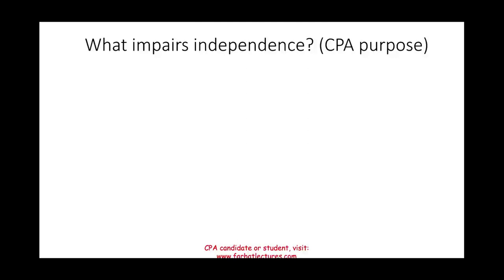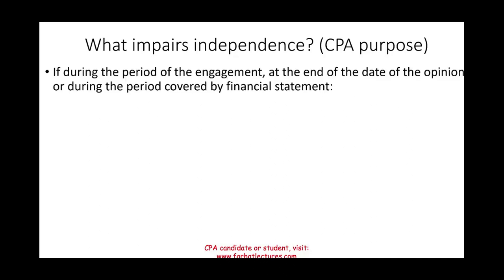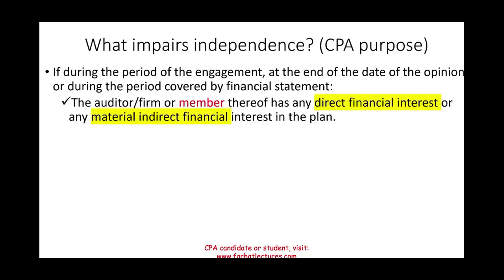Now, what impairs independence for CPA exam purposes? If during the engagement, at the end of the date of the opinion, or during the period covered by the financial statement, the auditor, the firm, or a member thereof has any direct financial interests or any material indirect financial interests in the plan, independence is impaired. You cannot have any direct financial interests, and you cannot have any material indirect financial interests.